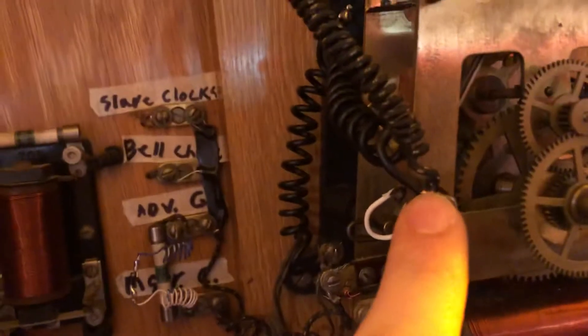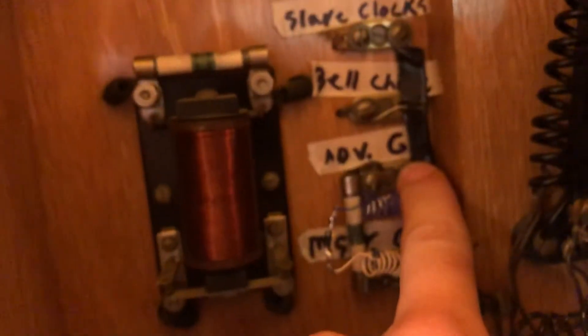And then that feeds ground from this contact, which is connected to that switch you saw. That goes up, out, and then returns onto this contact. This is the main advanced ground, so whenever it gets to the top of the minute, it advances everything one minute forward.